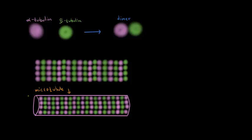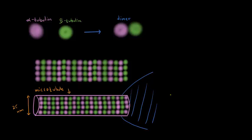The diameter of a microtubule is approximately 25 nanometers. At one end, the microtubule is anchored to a structure called the microtubule organizing center, or MTOC for short.